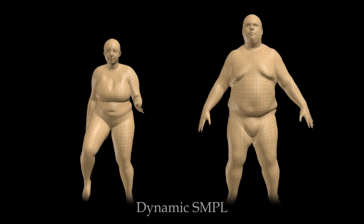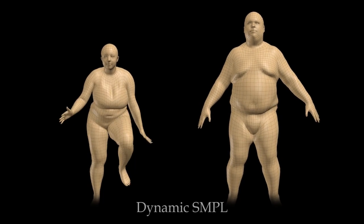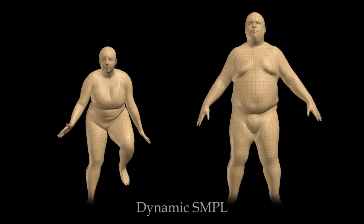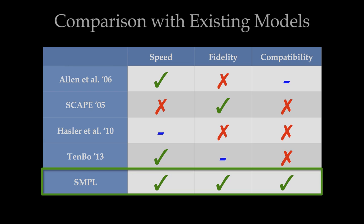In contrast, our skinned multi-person linear model, called SMPL, is learned from data, realistically represents any body shape in any pose, is more accurate than recent methods, and is compatible with existing graphics pipelines.